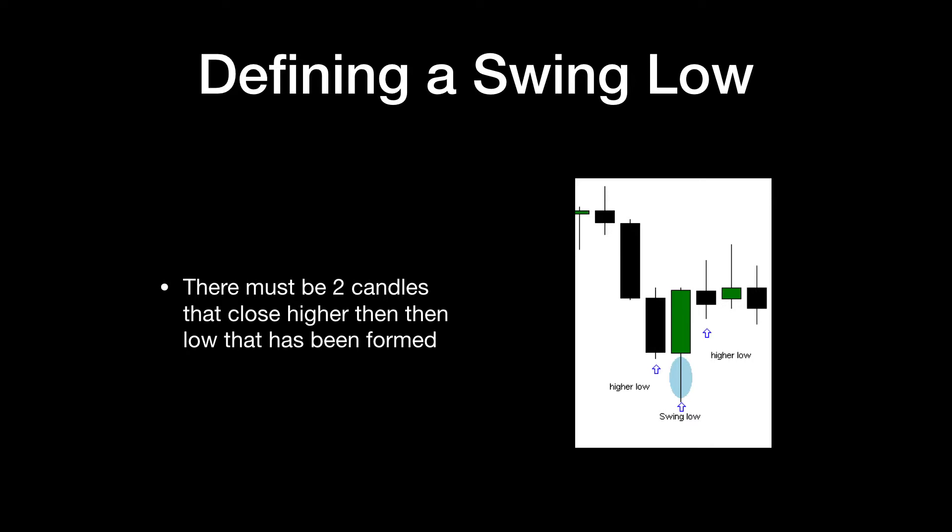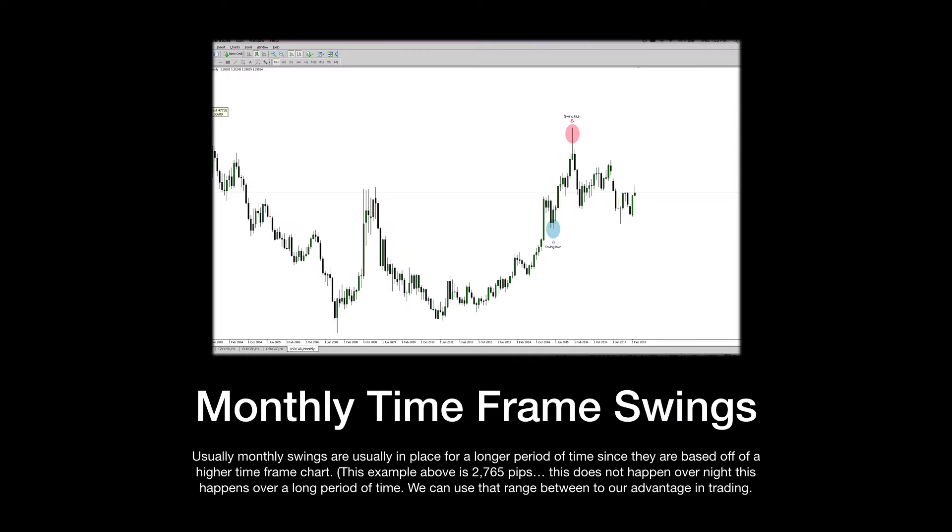It doesn't always have to be a green up candle for a swing low — you're just looking for two candles on each side of it: one candle to the left, one candle to the right. Make sure that those are higher lows than the one in the middle.